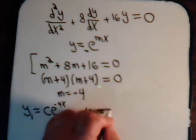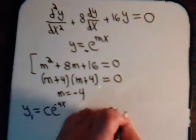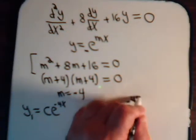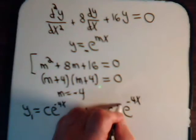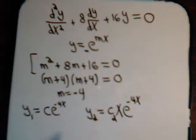y2 is some arbitrary constant e to the minus 4x. Only here now we have an x. And this gives us two solutions to the equation.